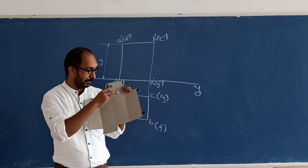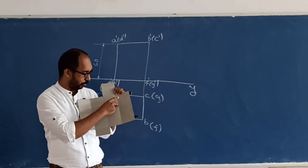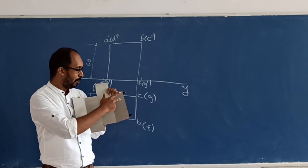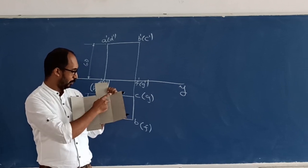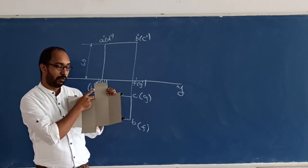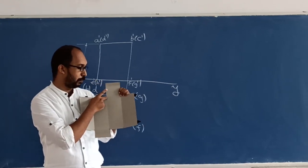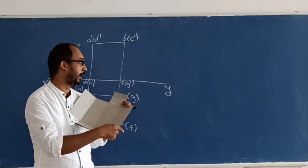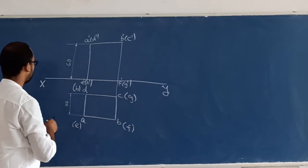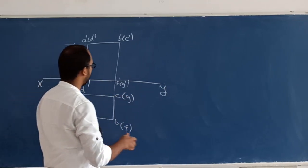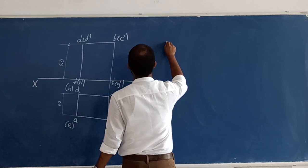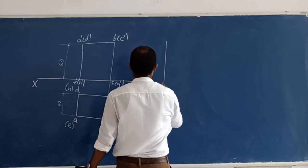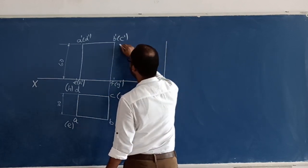How many lateral surfaces? 1, 2, 3, 4 — that is all lateral surfaces. So, 4 into what is the length of this base edge? 30 mm. So 30 into 4. We can develop the lateral surface. The height is 60 mm.